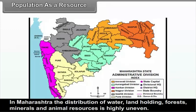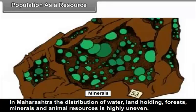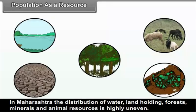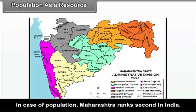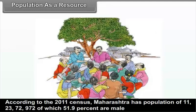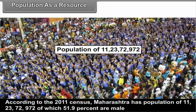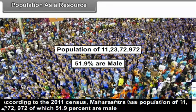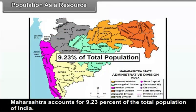In Maharashtra, the distribution of water, landholding, forests, minerals, and animal resources is highly uneven, and the use of these resources depends entirely on man. Maharashtra ranks second in India in population. According to the 2011 census, Maharashtra has a population of 11 crores 23 lakhs 72 thousand 972, of which 51.9% are male and 48.1% are female. Maharashtra accounts for 9.23% of the total population of India.